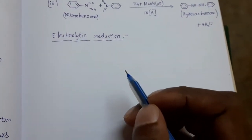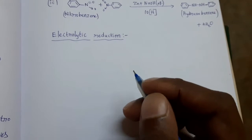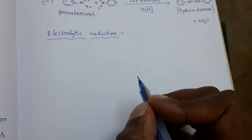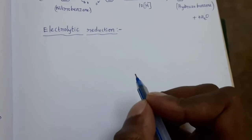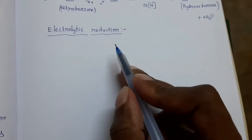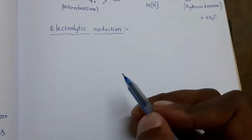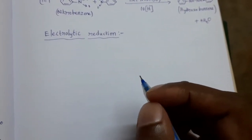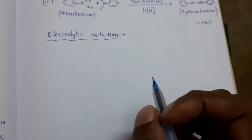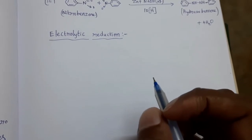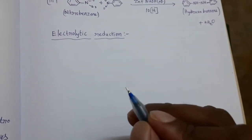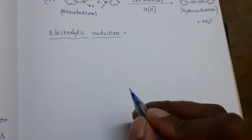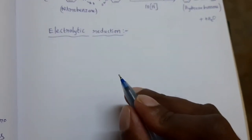Electrolytic condition means by passing electricity through a solution of a particular substance, if we convert that substance into another substance, that is called electrolysis. Now a reduction process takes place electrolytically — that means by passing electricity through the solution of nitrobenzene in the presence of an acid or base, it undergoes reduction. This is called electrolytic reduction.